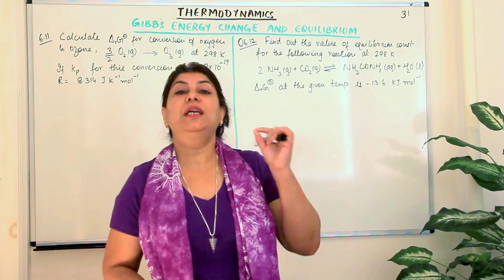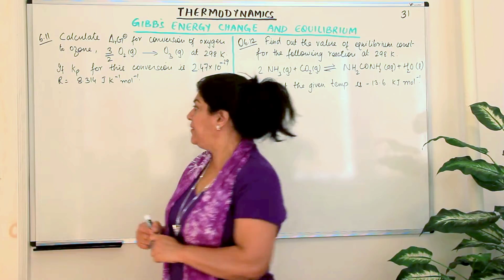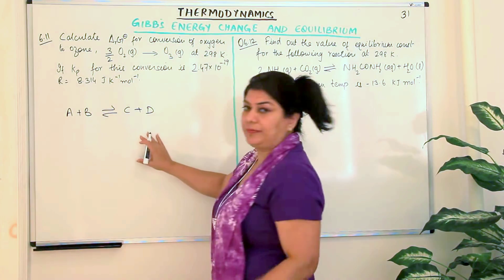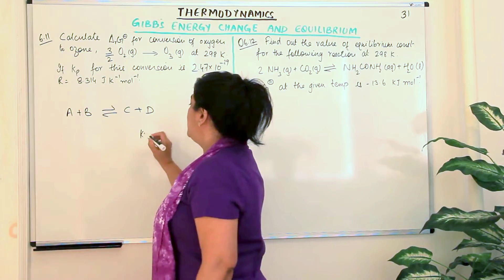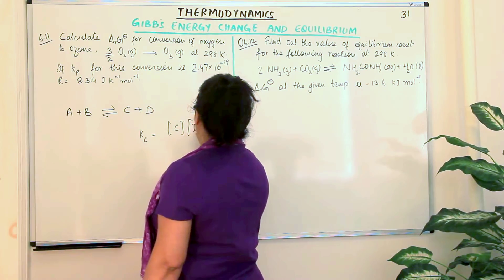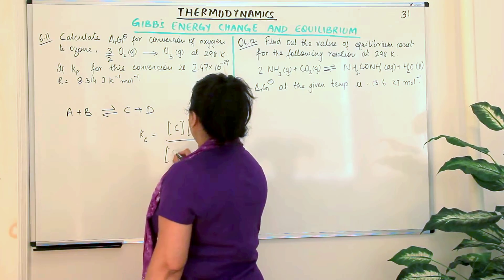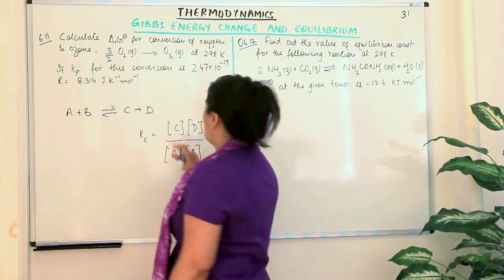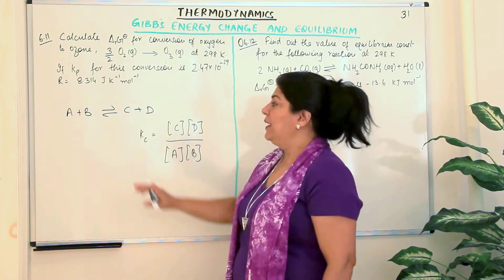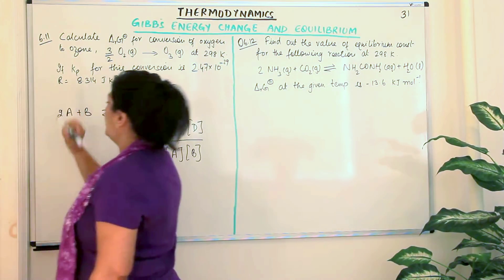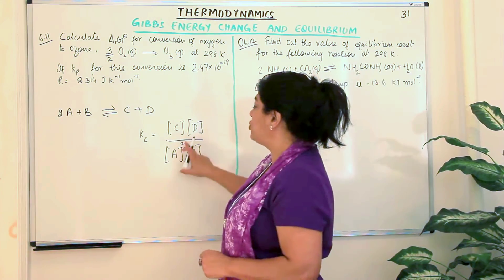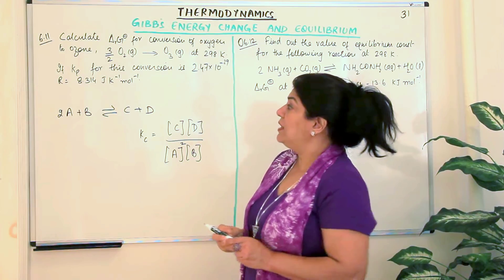Let me remind you what equilibrium constant K is. For a reaction A + B → C + D at chemical equilibrium, the equilibrium constant in terms of concentration, Kc, is the product of the concentrations of the products divided by the concentrations of the reactants. If you have a stoichiometric coefficient of 2, for example, then that concentration term is raised to the power of that stoichiometric coefficient when finding Kc.